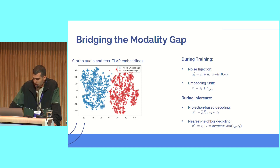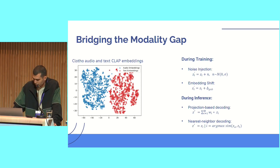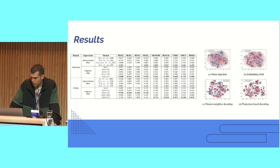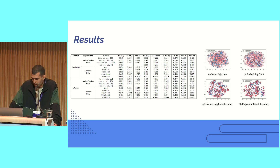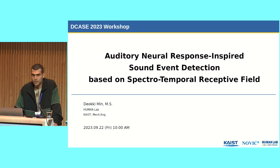The gap-bridging methods include noise injection and embedding shift applied during training, and projection-based decoding and nearest-neighbor decoding applied during inference. Our results show that all methods are successful to some extent at condensing the modality gap, and our methods perform comparably to fully supervised prior arts, especially on the Clotho dataset. Our best performing method achieves almost 80% of the performance of the current fully supervised model without having seen any in-domain audio data during training and being much faster to train. Please come by the poster session for further discussion. Thank you.